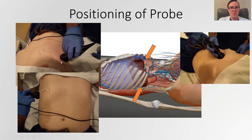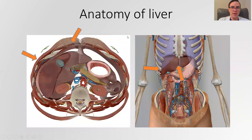Going in between the ribs can be a little challenging as you've got to find that cozy place right in there where the ribs aren't blocking your view. These anatomical diagrams show what the views look like on cross-section — from in front of the abdomen you're able to image this area really well, and from the side you're able to image this other area really well.